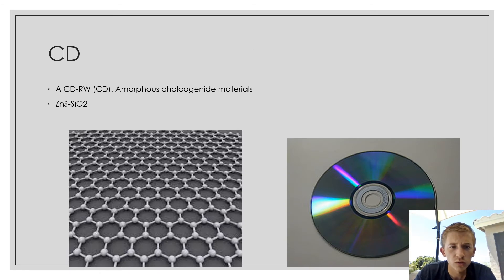CDs actually use chalcogenide materials. On your right, you have a CD here, and then on the left is the 2D structure of graphene, which is not a chalcogenide, but I just wanted you to see the 2D structure of it. The CD is made of zinc sulfide and silicon dioxide.